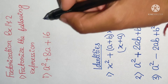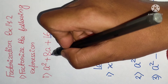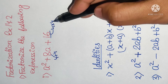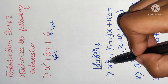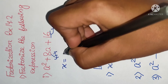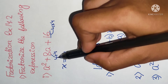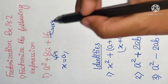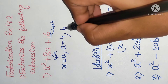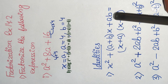As you can see, 16 can be written as 4 × 4, and 8 can be written as 4 + 4. So if we compare this given expression with the first identity, x² corresponds to a², meaning x is a in this expression. In place of a + b we have 4 + 4, and in place of a × b we have 4 × 4. That means a = 4 and b = 4 here, so this expression satisfies the first identity.